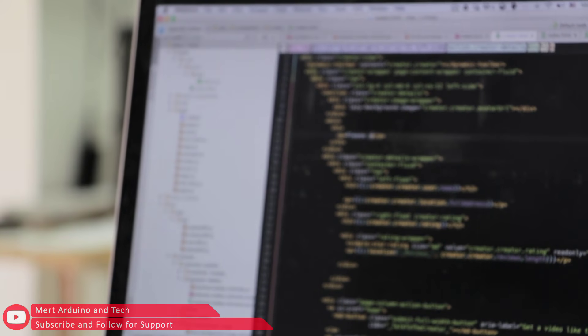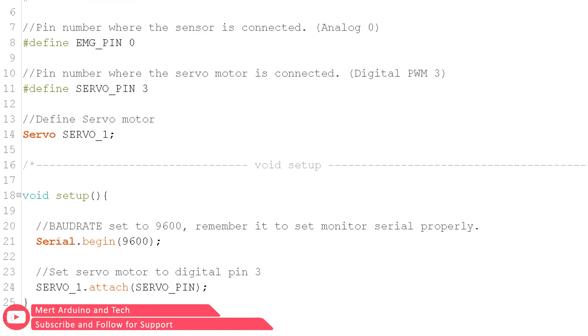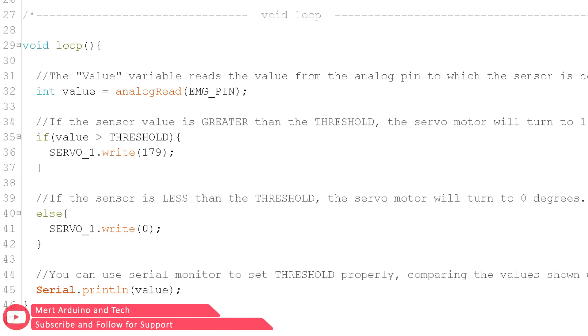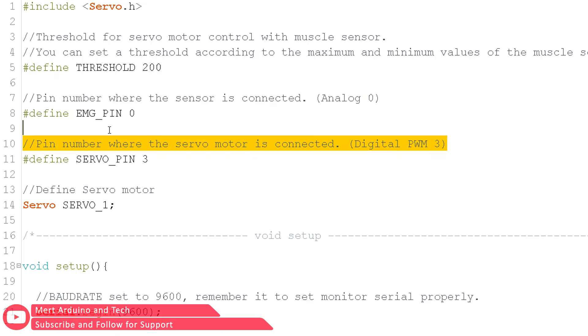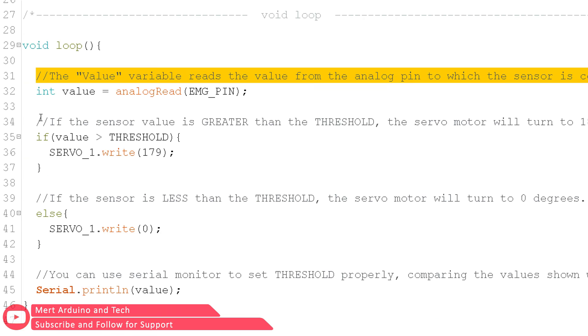Source code to move servo motor according to sensor value: You can find the source code link in the video description. There are explanations in the code so you can understand the code better.